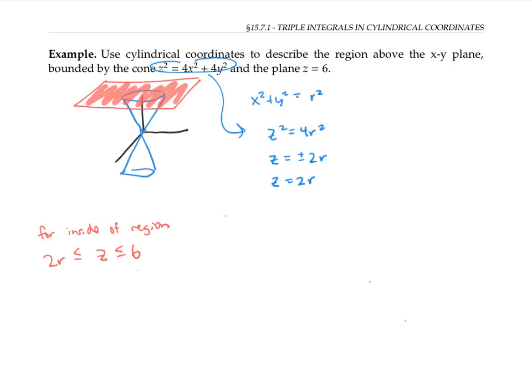To find bounds now for r and theta, I find it handy to project this three-dimensional region onto the xy plane or the r-theta plane and see what shape it spans. In this case, it'll span a circle.